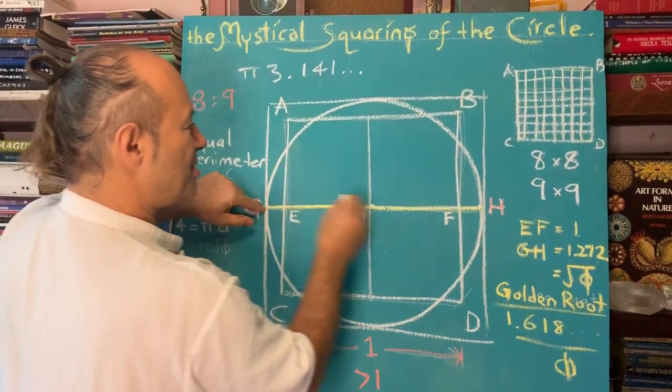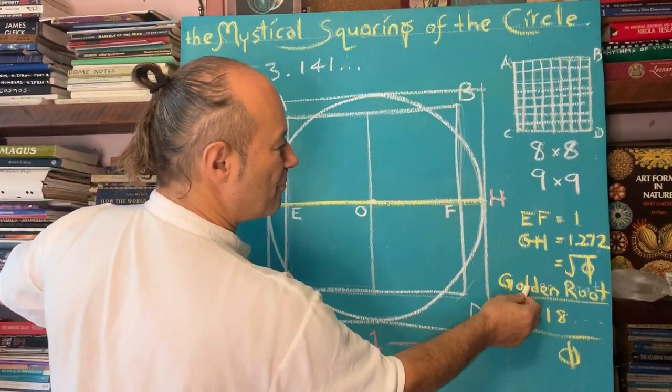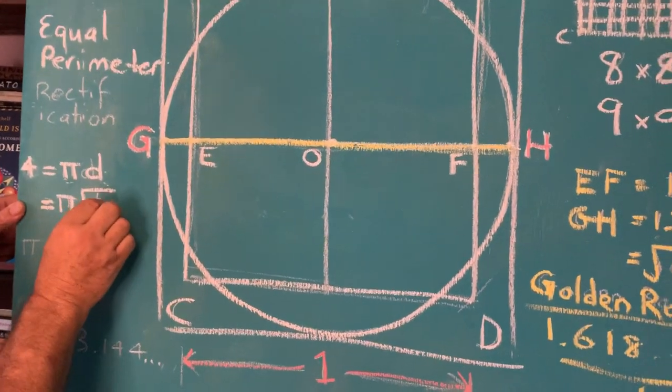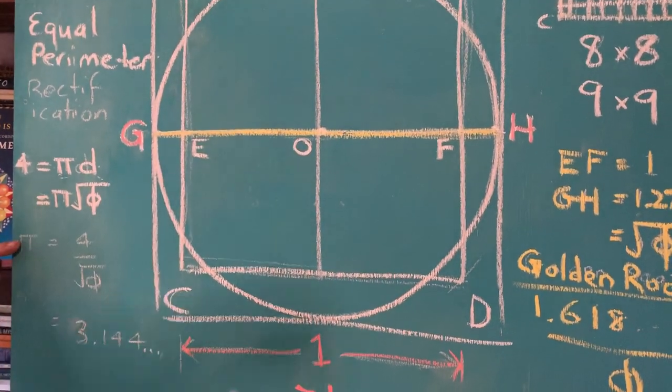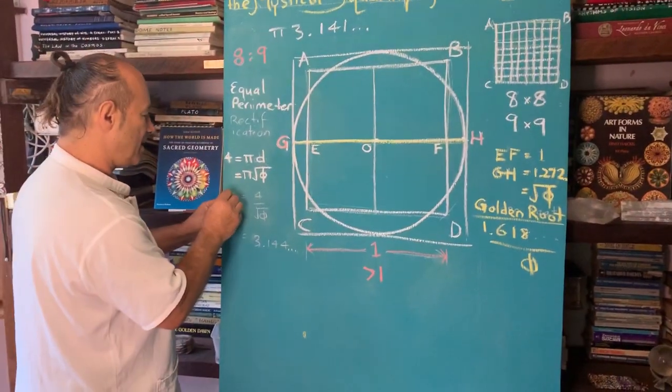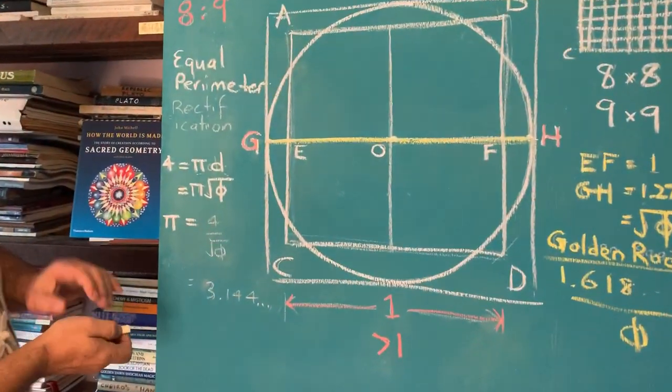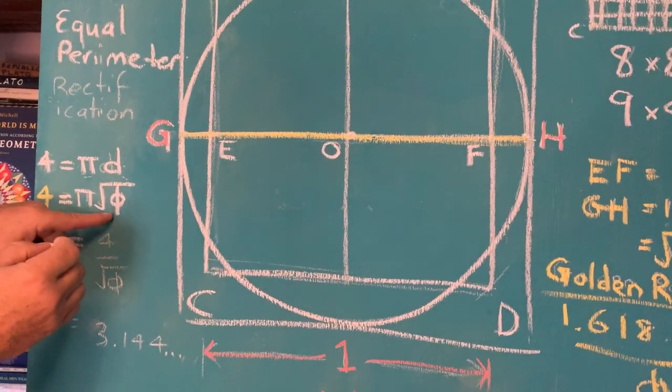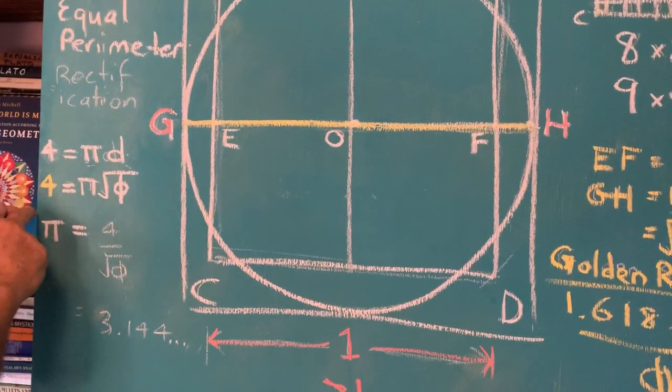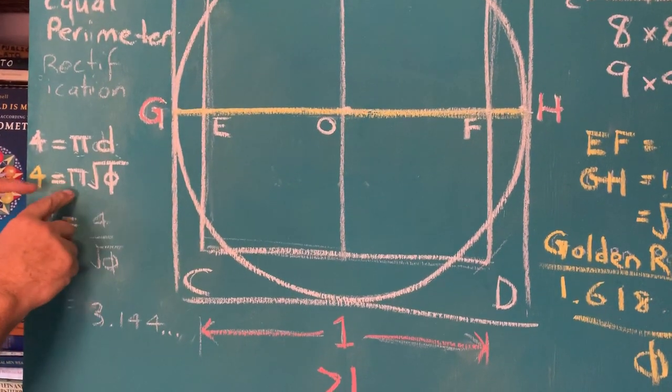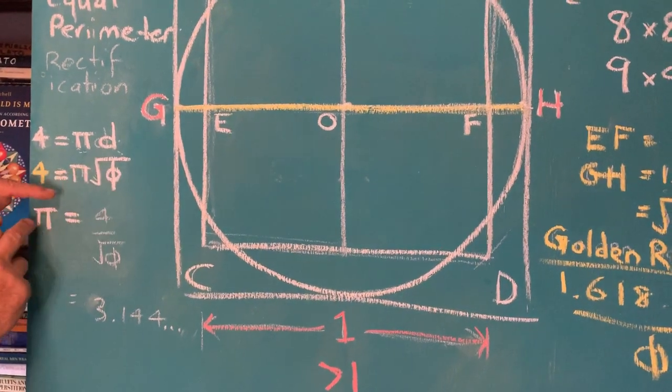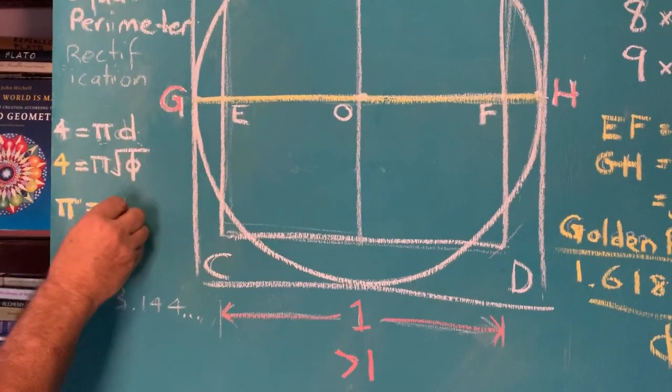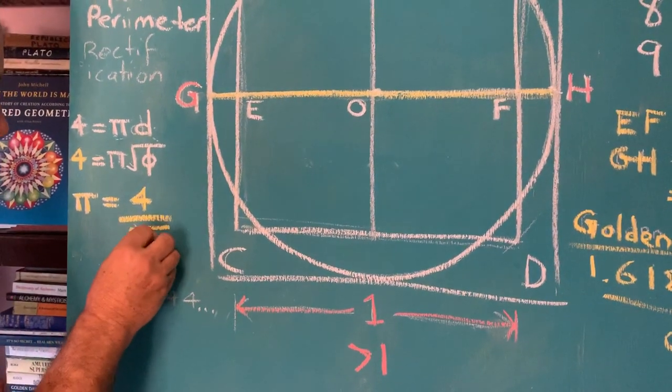But we know the diameter, GH. We know that GH is the golden root of root phi. So our equation becomes 4 equals pi times the square root of phi. But we want to know what pi is, this whole inquiry. What is the true value of pi? We want to establish that pi equals something. So because we have 4, the perimeter of the square equals pi times root phi. If I divide both sides by 4, I've got pi here. So to get pi on its own, I have to divide this side and that side by the golden root. So the answer is pi equals 4 divided by the square root of phi.